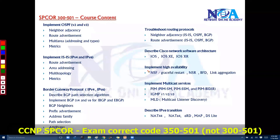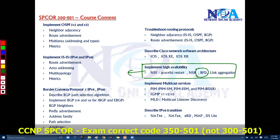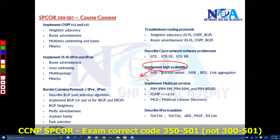Next, we'll cover some high availability concepts. High availability includes concepts like non-stop forwarding, graceful restart, non-stop routing, and BFD — Bidirectional Forwarding Detection — in OSPF and IS-IS protocols. These high availability options are used when a device or processor fails, allowing the device to continue forwarding traffic. We'll understand these different concepts, how they differ, and how they provide high availability.